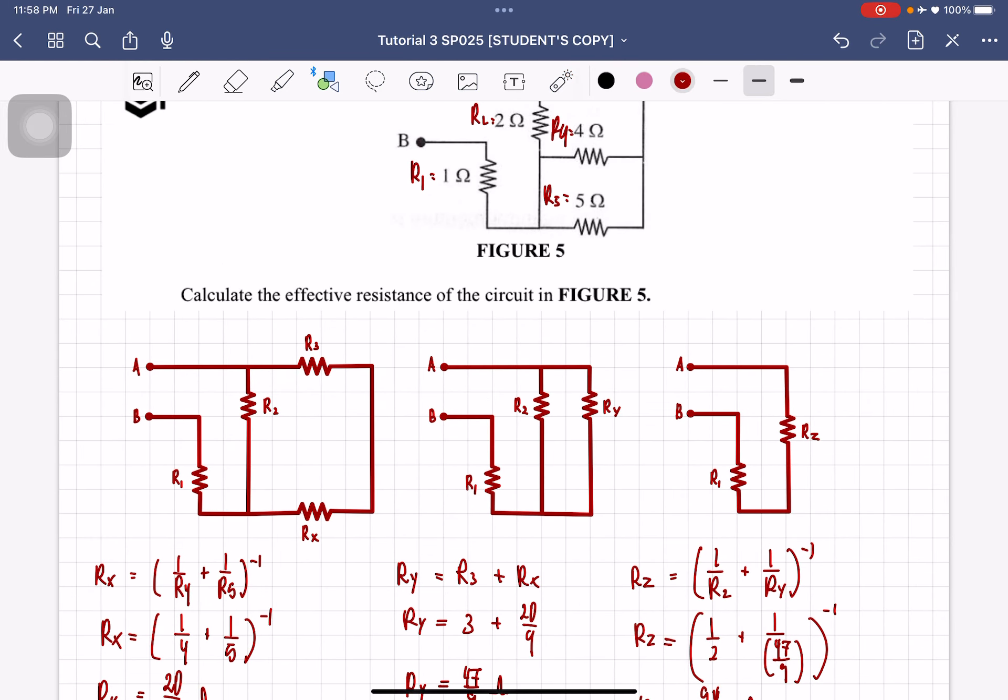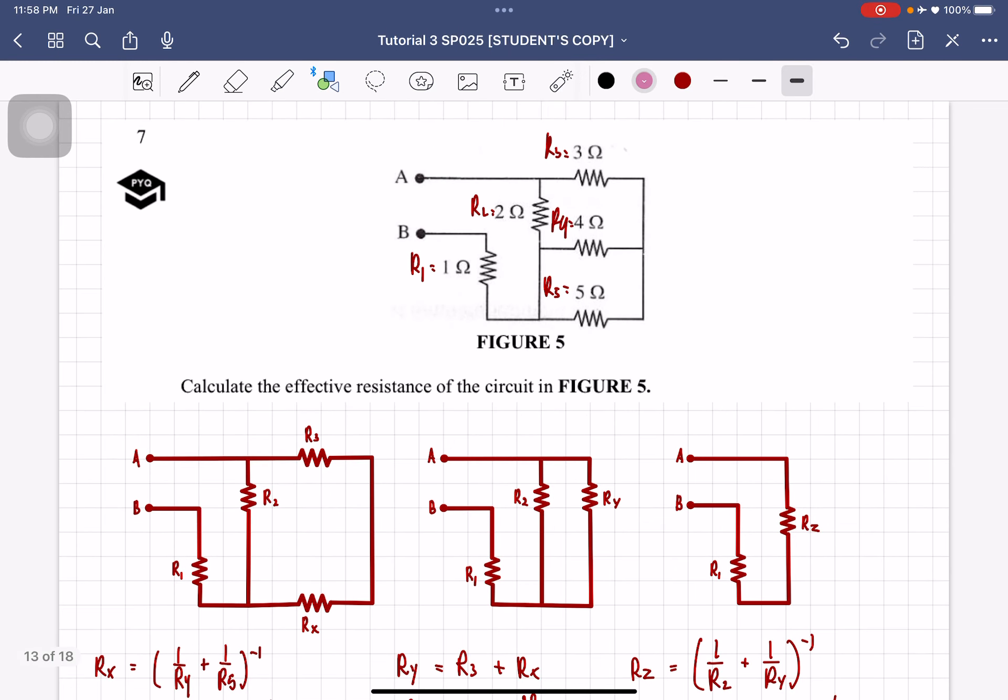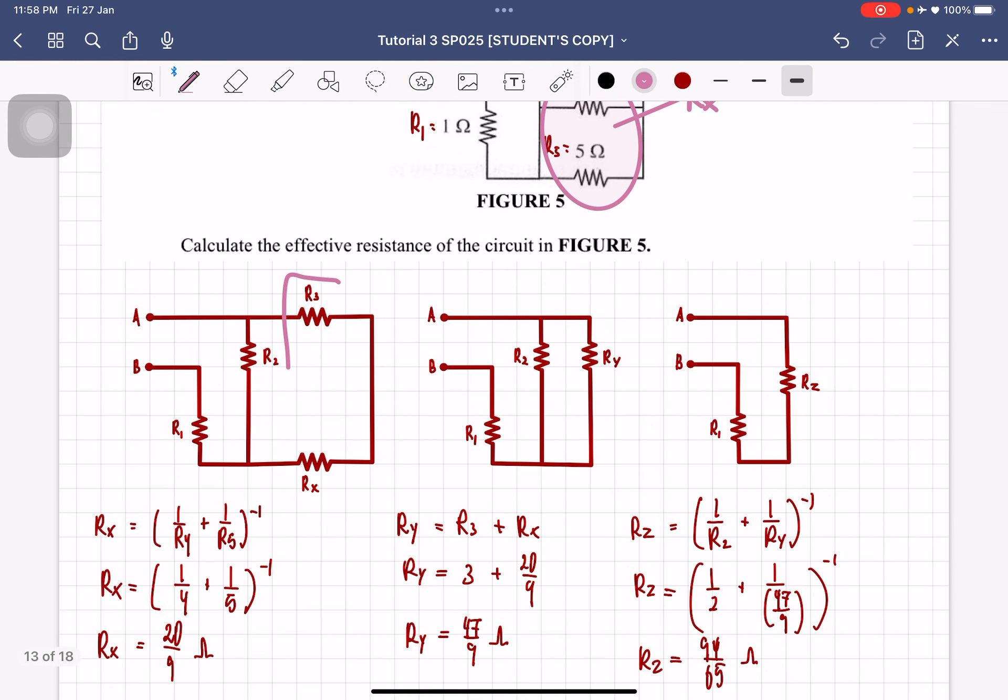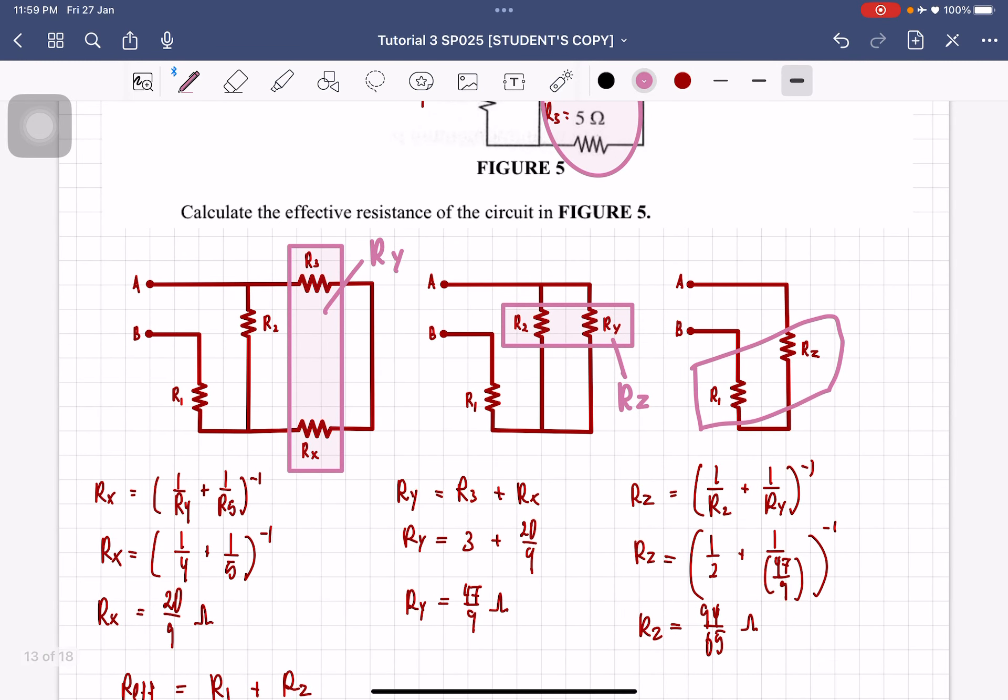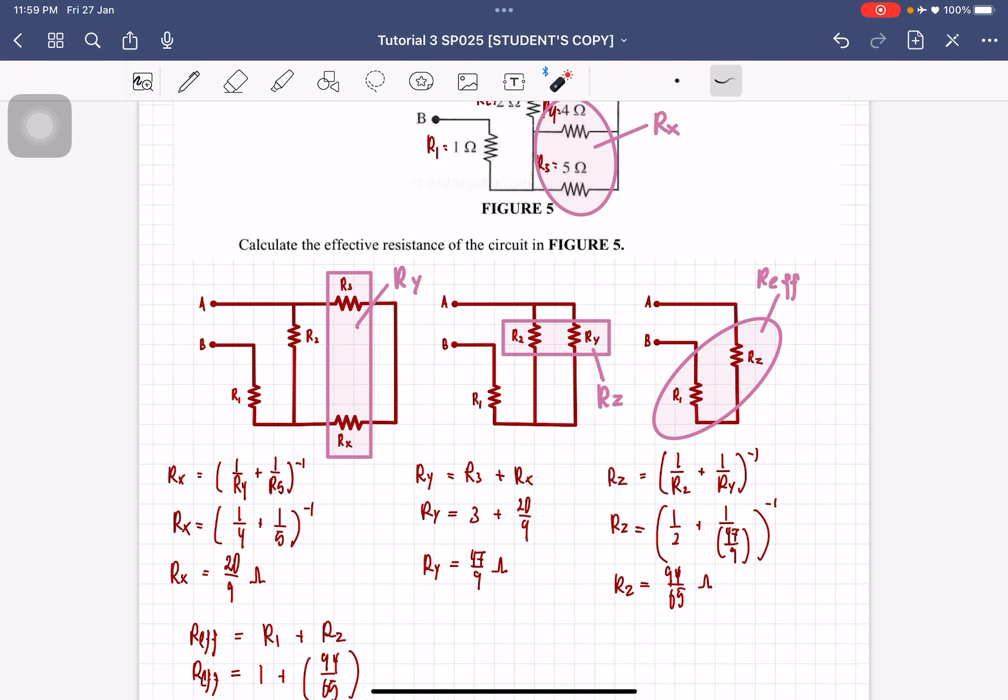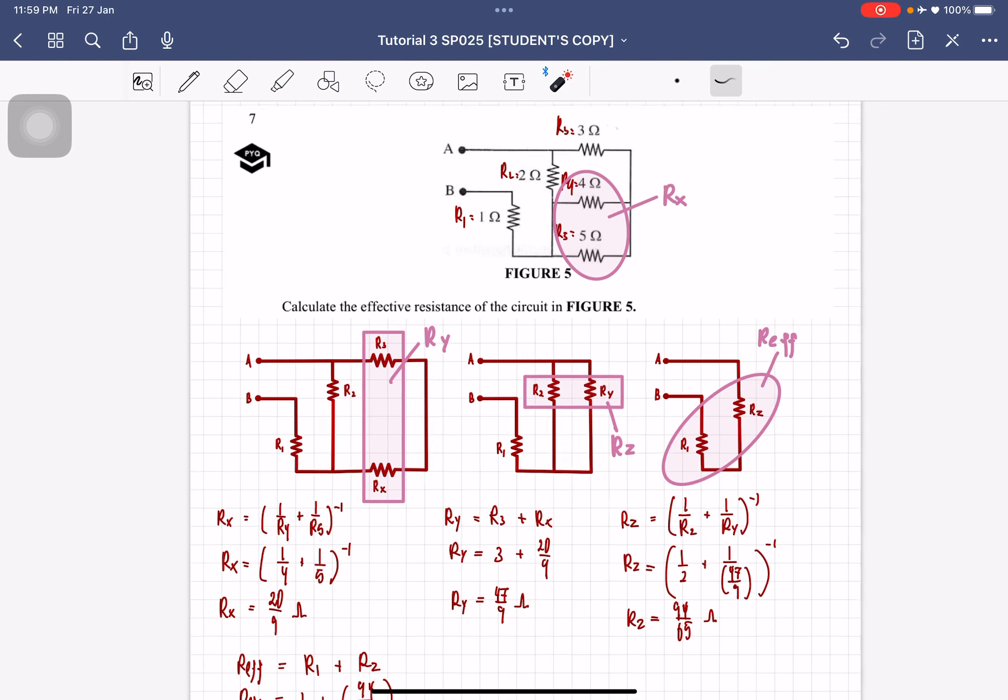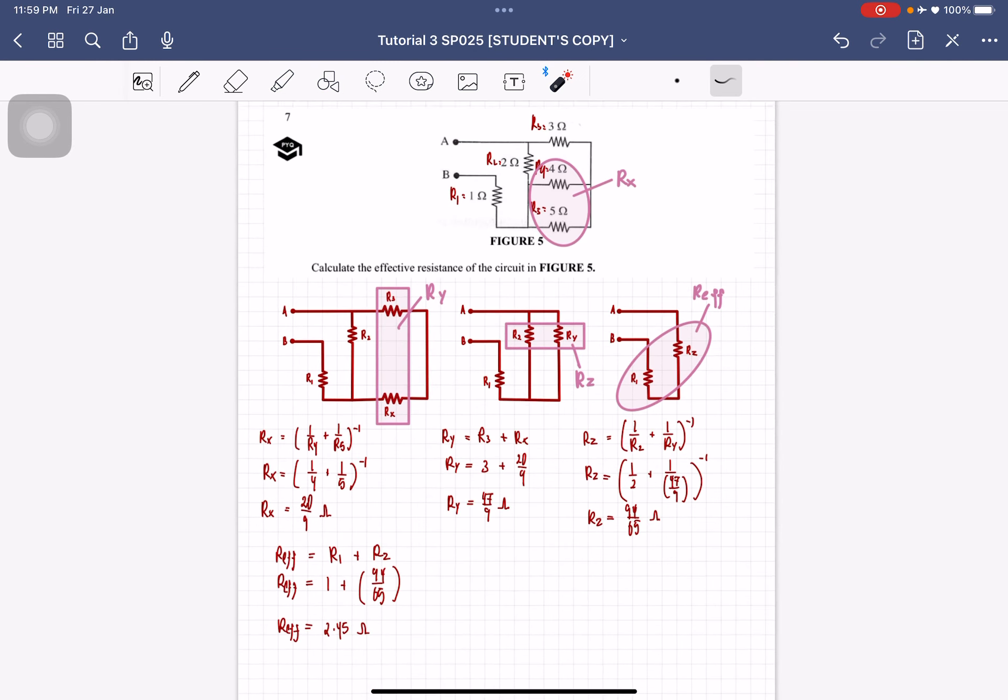So if you are confused in what I did, you can always ask me. Let me just kind of do it like this, so that you know what I am doing. This is Rx, and then this is basically your Ry, and these two pairs is your Rz. I am doing it this way because you might have a problem understanding how I simplify each of the resistors. So basically, this is what I did, which resistors did I simplify? So this is the solution for question number 7.